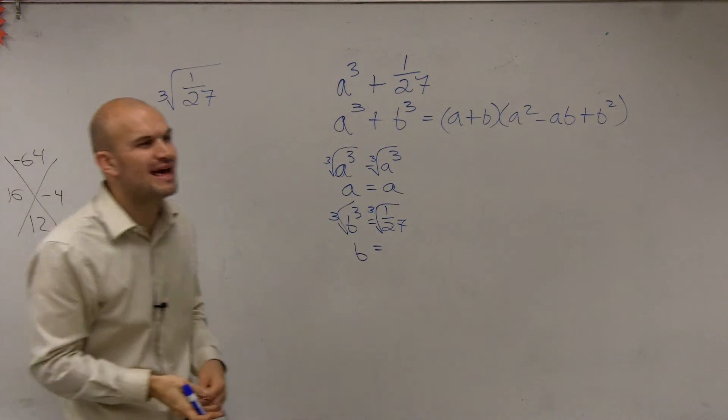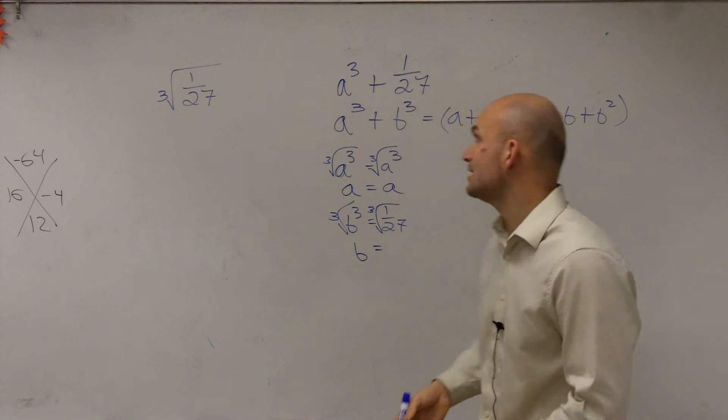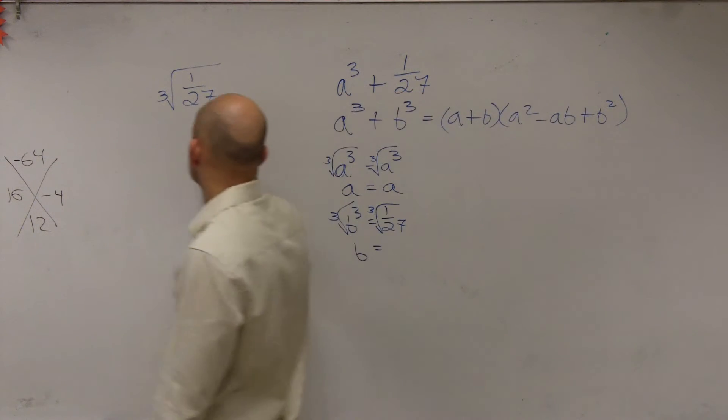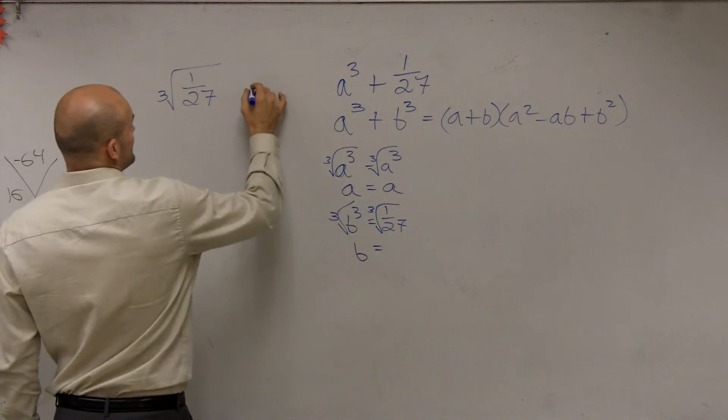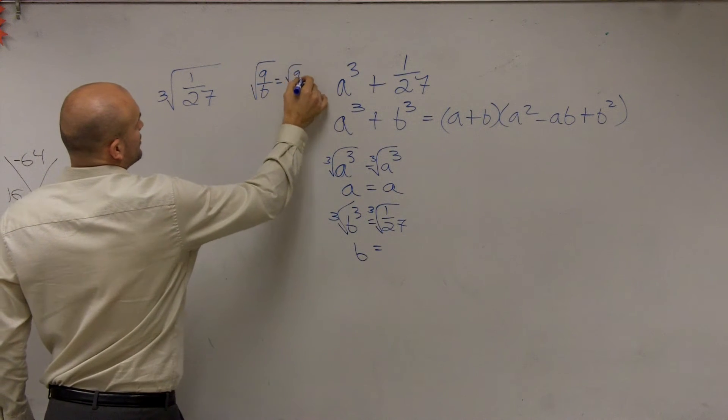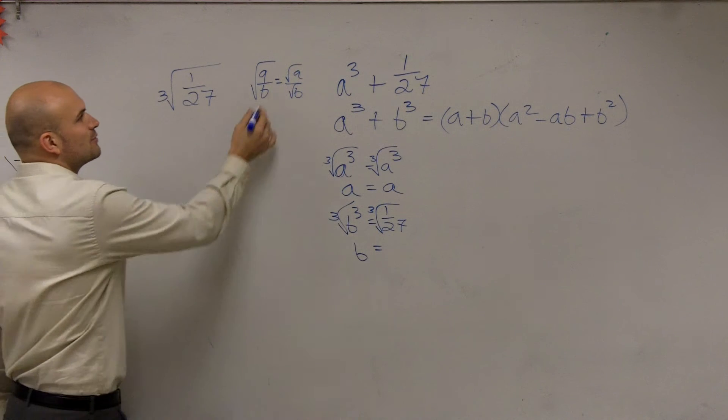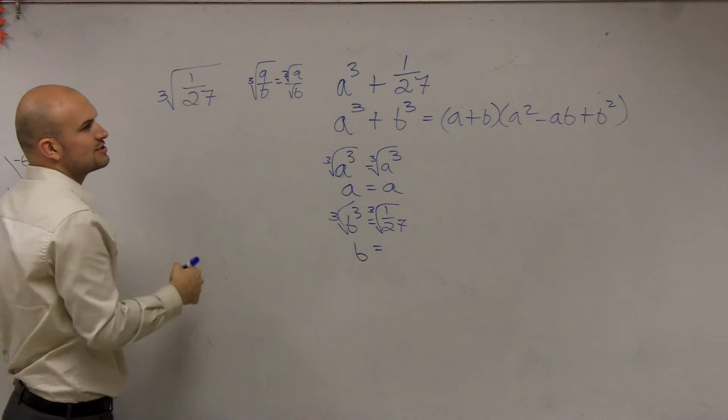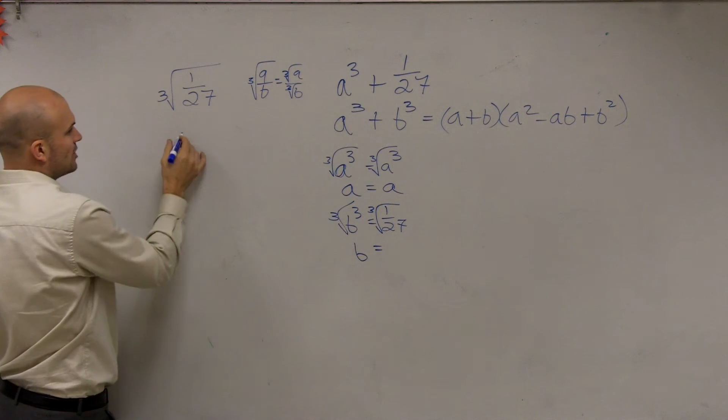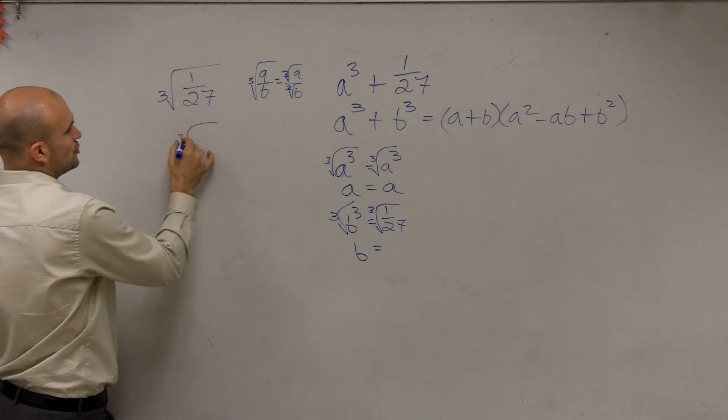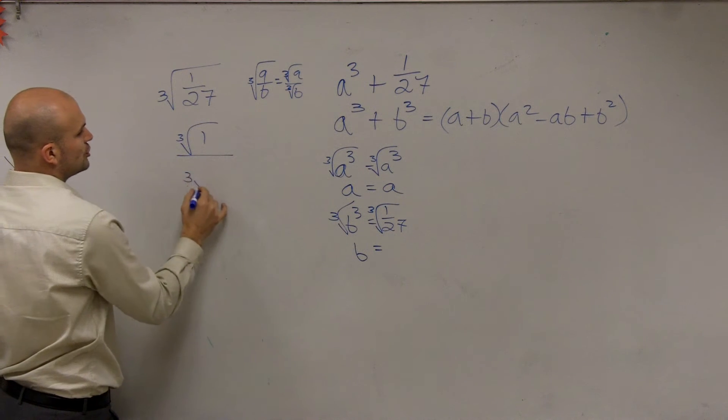How do we do that? Remember, with square roots, the square root of a over b equals the square root of a over the square root of b. That's the same thing with cube roots. The same property applies. Therefore, this equals the cube root of 1 over the cube root of 27.